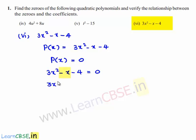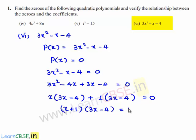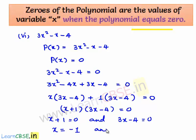By splitting method, we can write 3x squared minus x minus 4 as 3x squared minus 4x plus 3x minus 4 is equal to 0. Taking x as common, we get x times of 3x minus 4, and taking 1 as common, we get 1 times of 3x minus 4, which gives x plus 1 times of 3x minus 4 is equal to 0. This becomes x plus 1 equal to 0 and 3x minus 4 equal to 0, so x is equal to minus 1 and x is equal to 4 by 3.